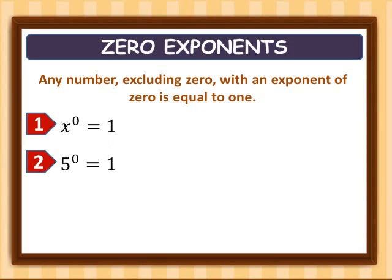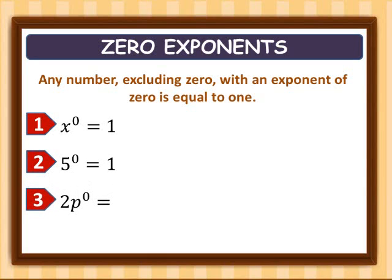Third example: two p raised to zero. Two stays as two, and p raised to zero is one. So two times one equals two.